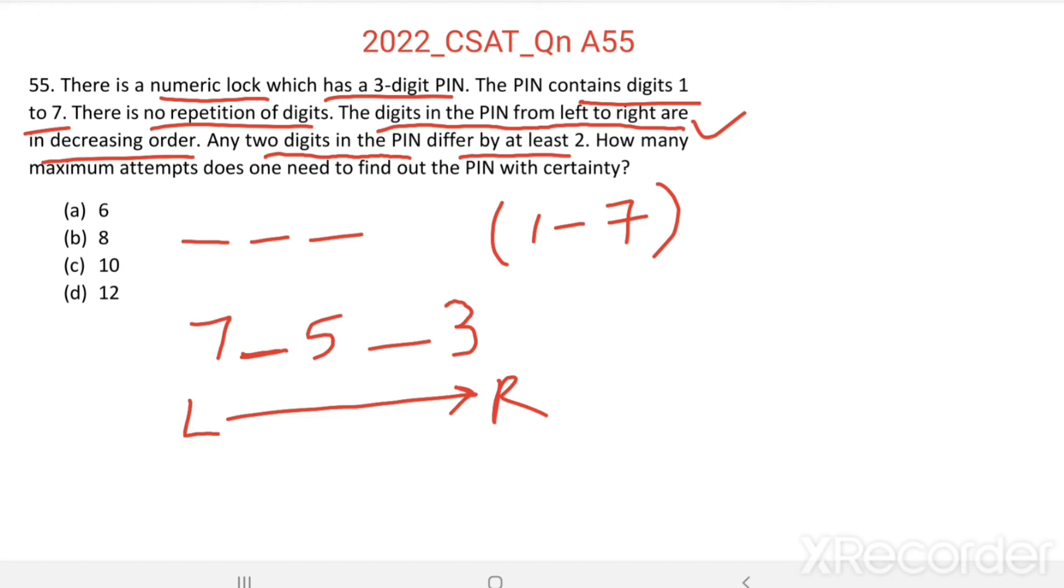7, 5, 3. And at least two means, we can have another PIN 7, 4, 2. Here the difference is 3. So, there should be at least two difference.